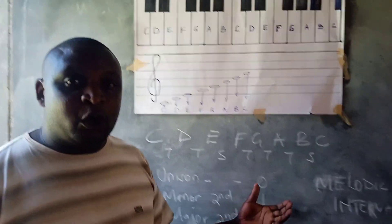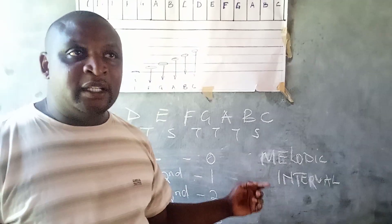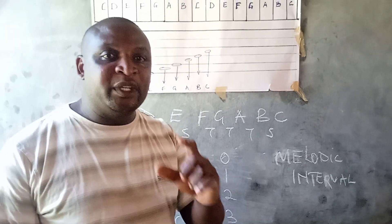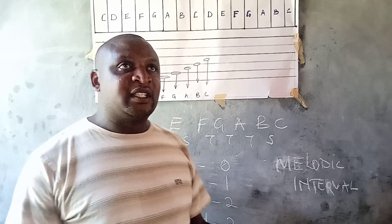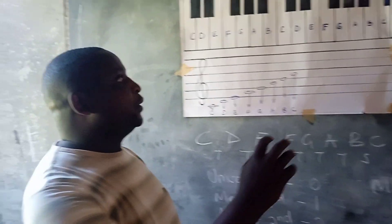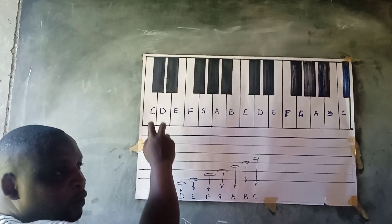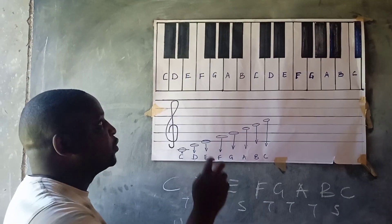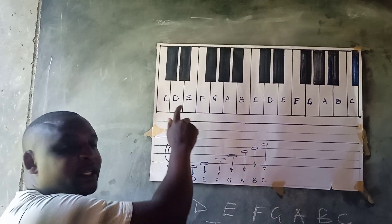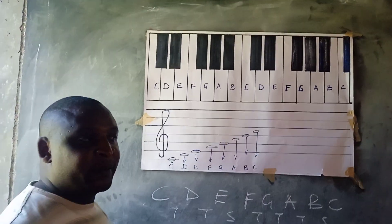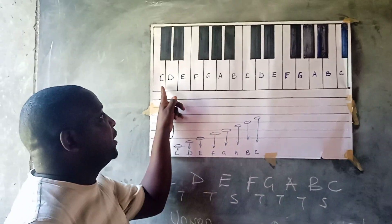First of all, we need to identify that a melodic interval is the distance in pitch between a note and the next note. For example, if you are playing a keyboard and you press C and then D, that is what we call a melodic interval — we want to understand what distance in pitch you have created. That is the first thing.